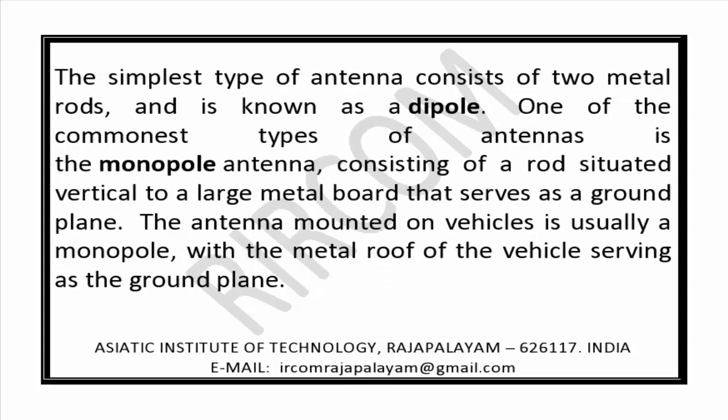The simplest type of antenna consists of two metal rods and is known as a dipole. One of the common types of antennas is the monopole antenna, consisting of a rod situated vertically on a large metal board that serves as a ground plane.